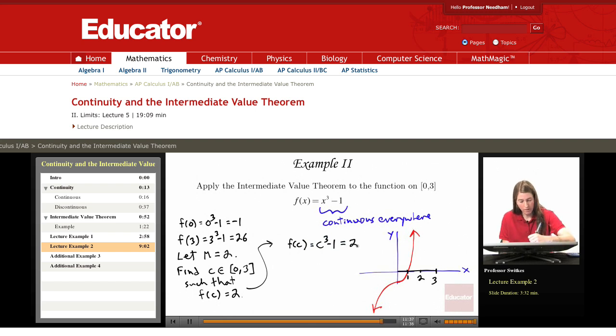So c cubed equals 3 and so c is the cubed root of 3, and the cubed root of 3 is approximately the following, approximately 1.442, which of course is on the interval 0 to 3.